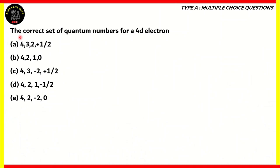The question states: the correct set of quantum numbers for a 4D electron. The options are: (A) 4, 3, 2, +½ — (B) 4, 2, 1, 0 — (C) 4, 3, -2, +½ — (D) 4, 2, 1, -½ — (E) 4, 2, -2, 0.